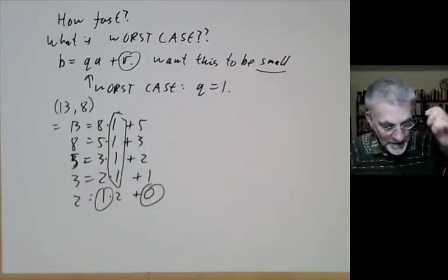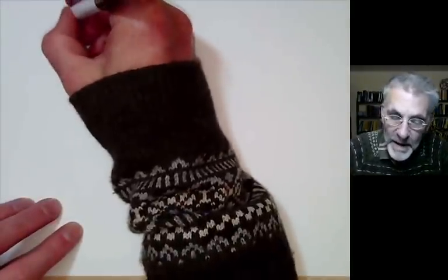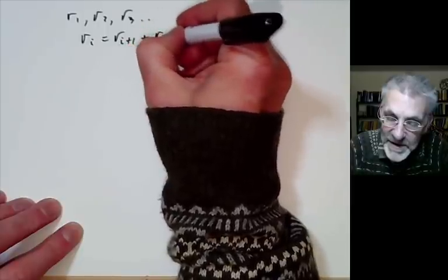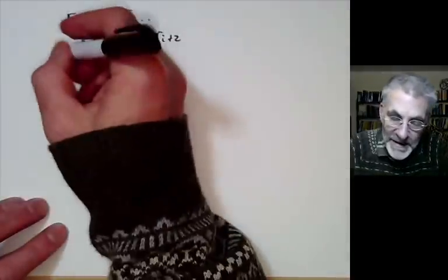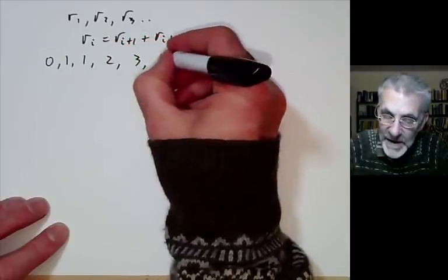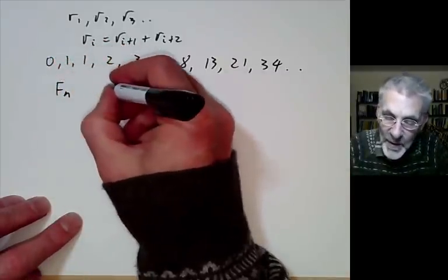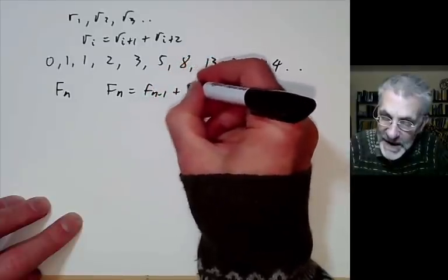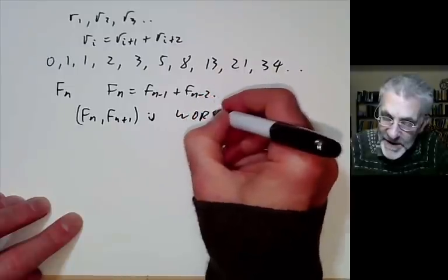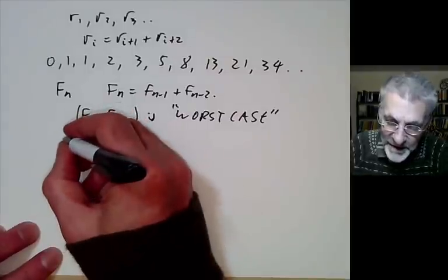So the Fibonacci numbers give the worst case for Euclid's algorithm. The numbers Fₙ satisfy Fₙ = Fₙ₋₁ + Fₙ₋₂, and finding gcd(Fₙ, Fₙ₋₁) converges as slowly as possible.